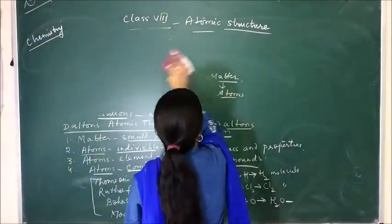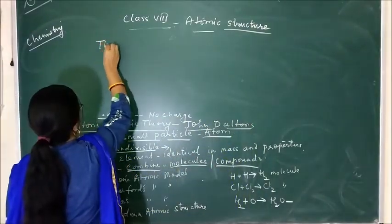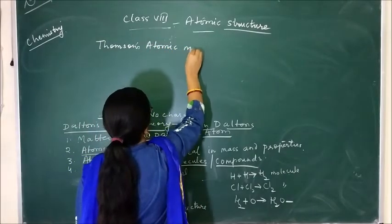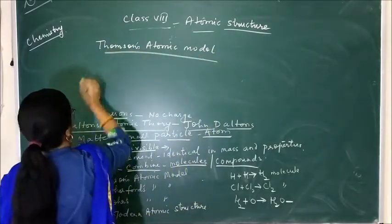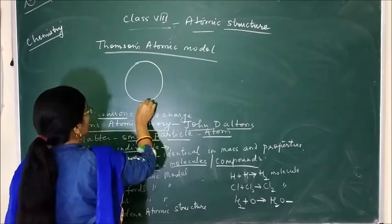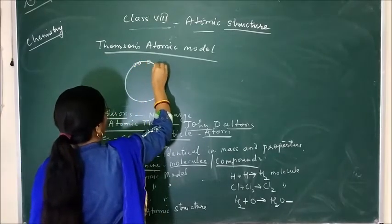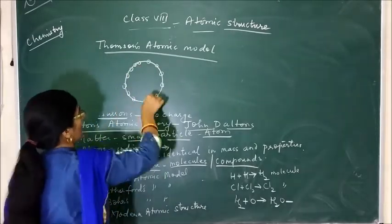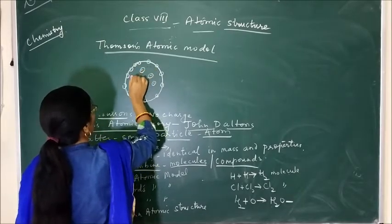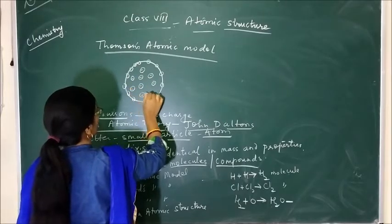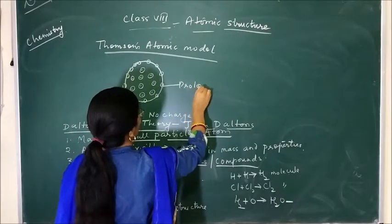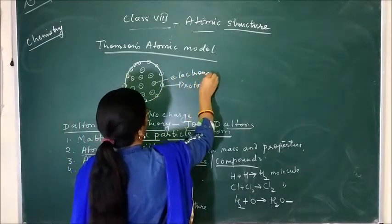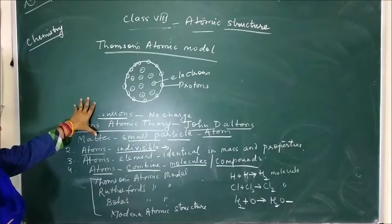First we will describe Thomson's atomic model, given by J.J. Thomson. According to his model, the atom has a positively charged sphere in which electrons are embedded. This is the Thomson's atomic model. But Thomson did not describe the atomic structure properly, so his model failed. He only described that in a sphere the protons are present and electrons are embedded inside.